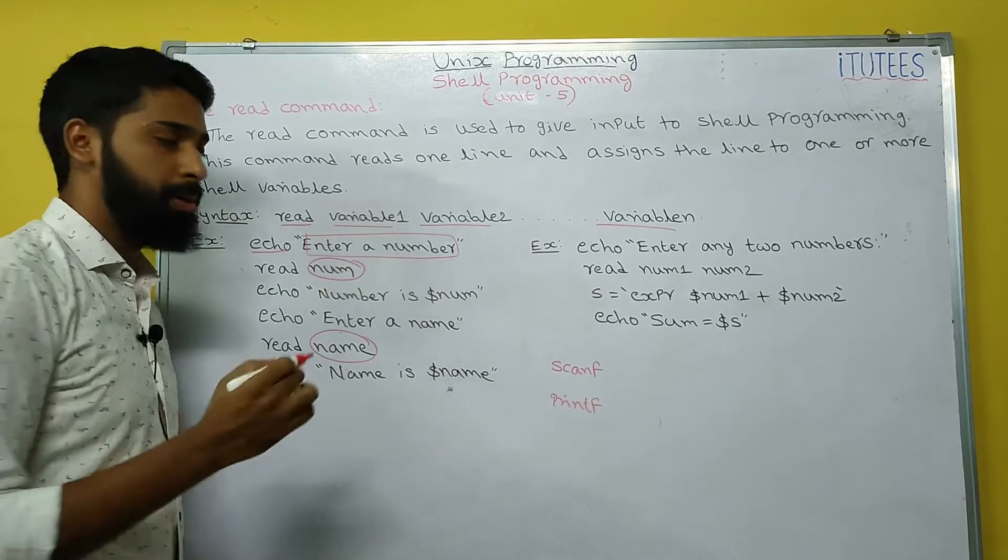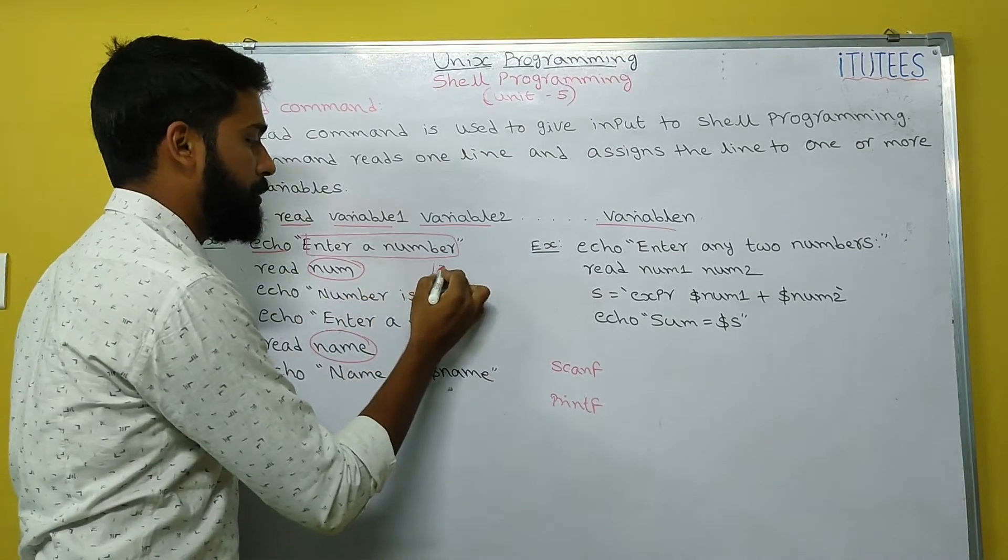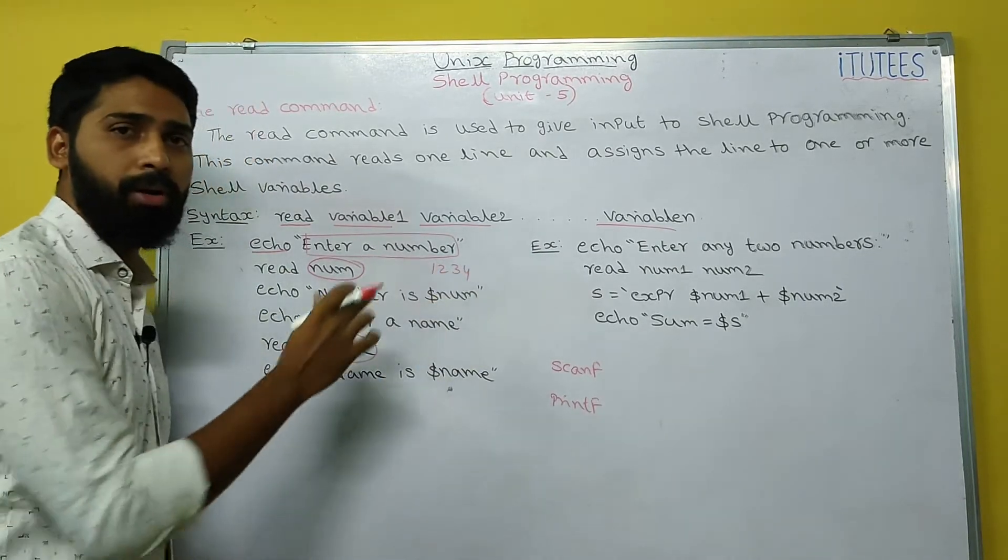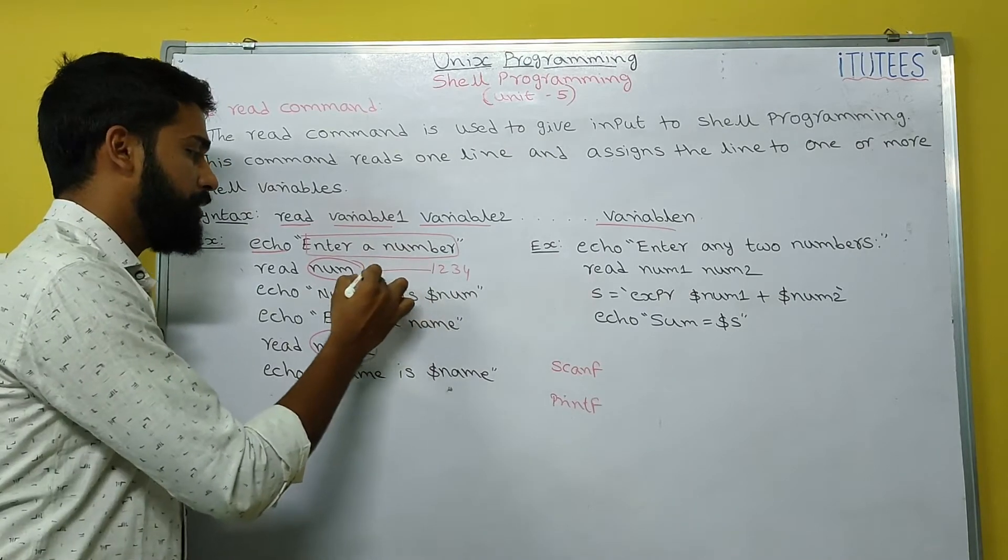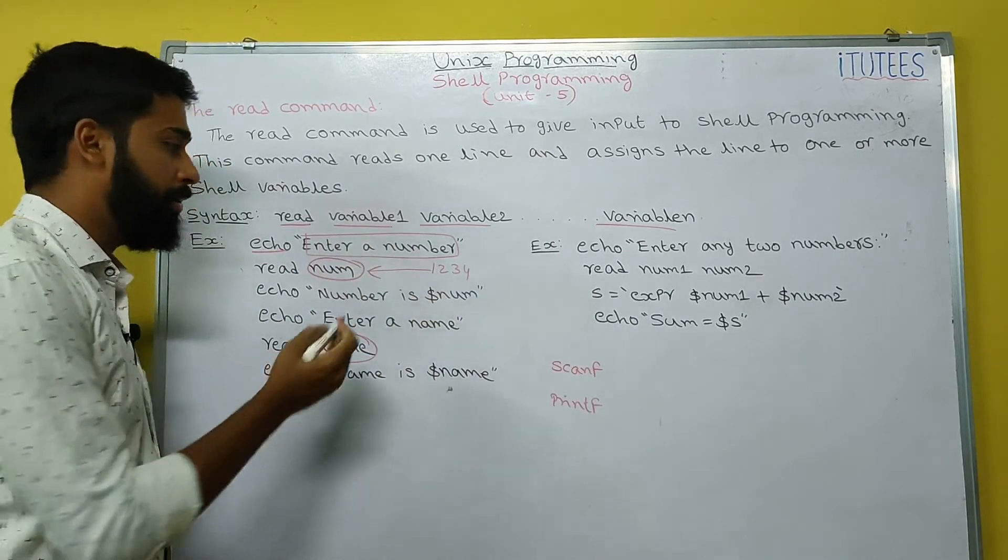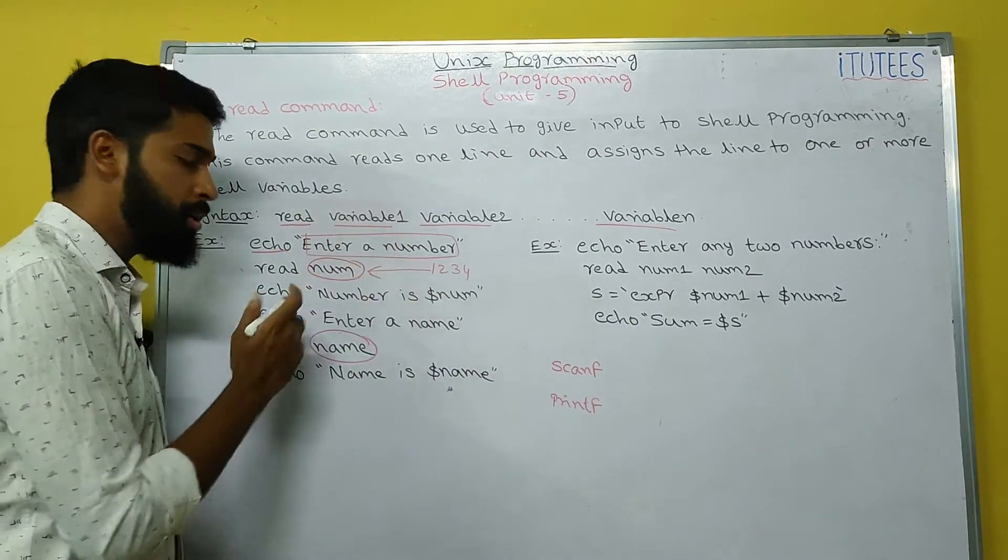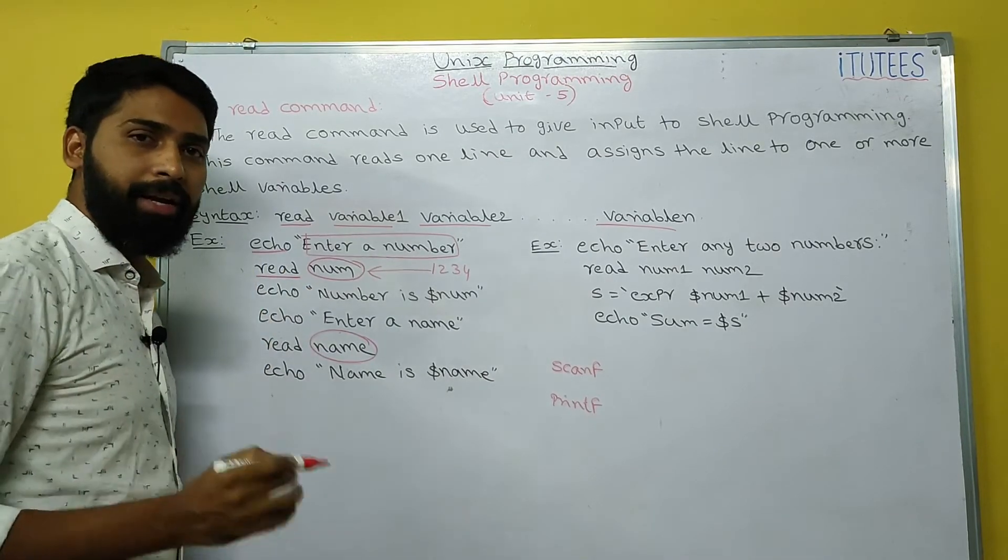So, read num - that means you enter some number, for example, 1234. Now, 1234 is assigned to the variable. How we are going to read the values from the keyboard? By using read command.